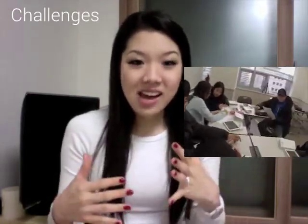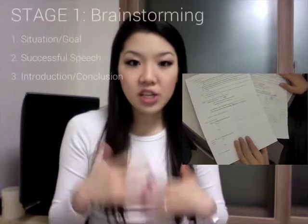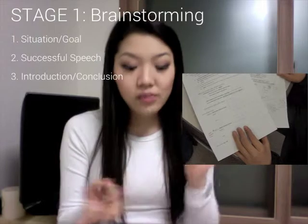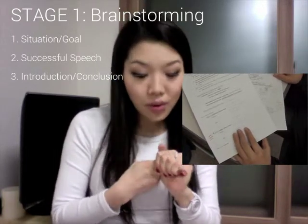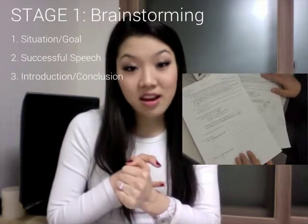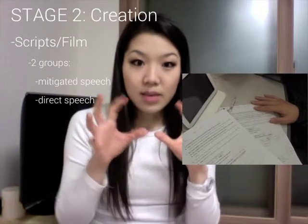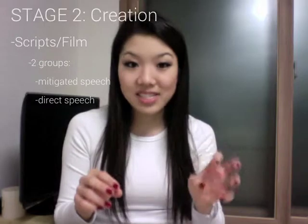Now for the challenges. My task sheet — I noticed I should have rearranged some steps or added more details. Originally I had two different stages: a brainstorming stage and a creation stage. Within the brainstorming stage, I had the students pick their situation and goal, decide which type of speech — mitigated or direct — would be successful, and then think of things to write into their introduction and conclusion. The second stage had two groups, one working on the mitigated speech scene while the other worked on the direct speech scene.